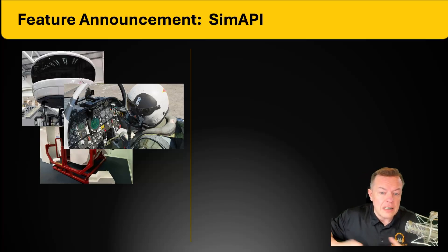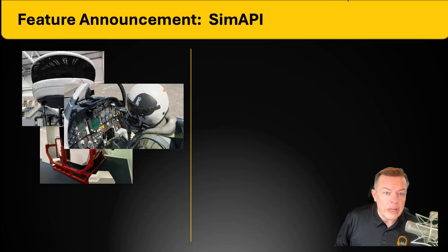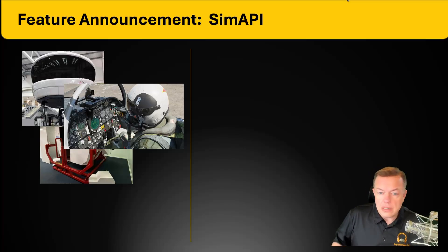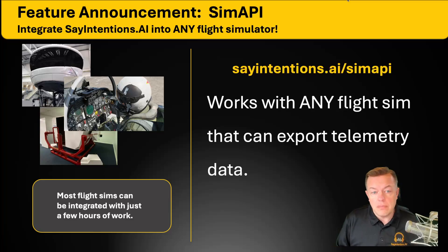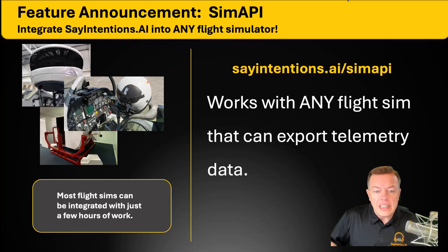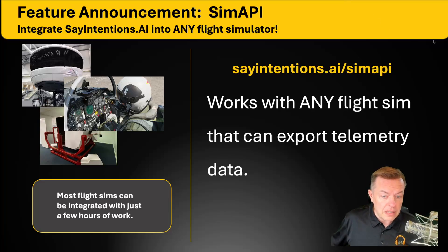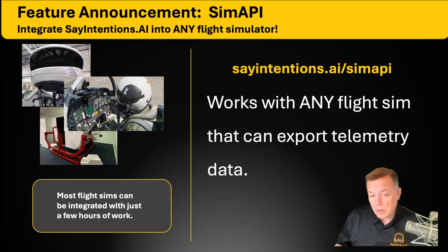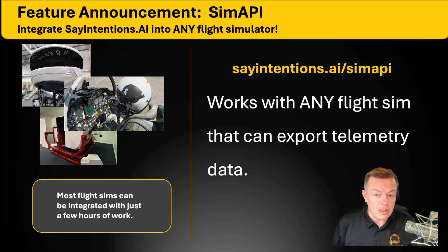So today we're making an announcement that takes this to the next level by introducing something we call SimAPI, which actually allows us to integrate with any flight simulator that can export telemetry data. We'll keep this nice and short, but if you go to sayintentions.ai/simapi, you'll get all of the details on how this works. The most important thing here is that you can now connect any flight simulator to the Say Intentions ecosystem by building a small adapter, and if you can export the basic telemetry data — there are probably 15 or 20 data fields that we need — you can connect that simulator into the ecosystem.